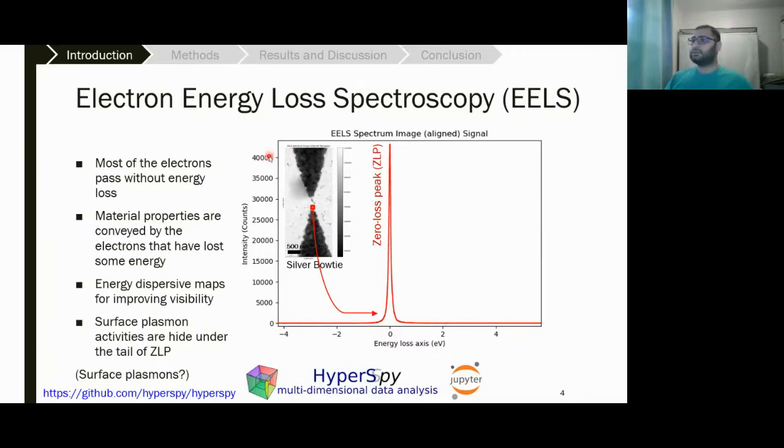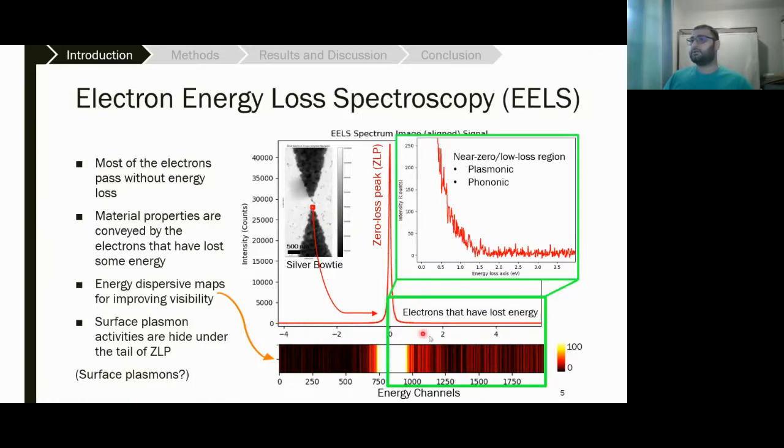This data is coming from experimentally obtained data. Here you can see we have a silver bow tie as a nano antenna. The spectra you can see here is coming from the pixel shown by this red box. All of the spectral analysis in this work is being done using HyperSpy software in Jupyter. The huge peak that you see here at the center is called the zero loss peak.